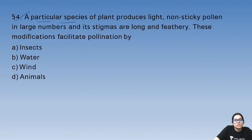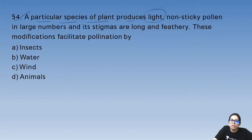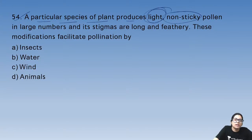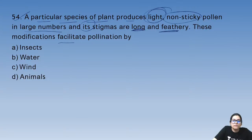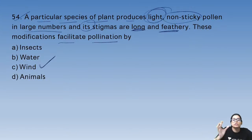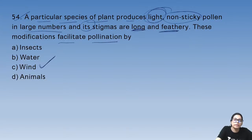Question 54: a plant species produces light, non-sticky pollen grains in large numbers, with a long and feathery stigma — these modifications facilitate wind pollination. They are light enough to fly, and the feathery stigma traps the pollen.